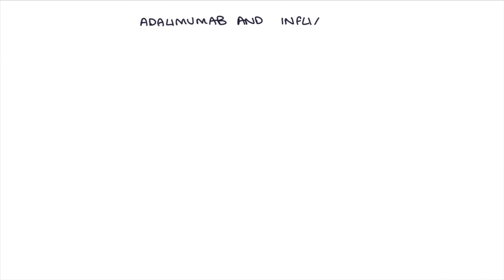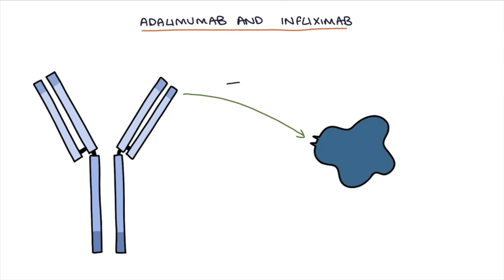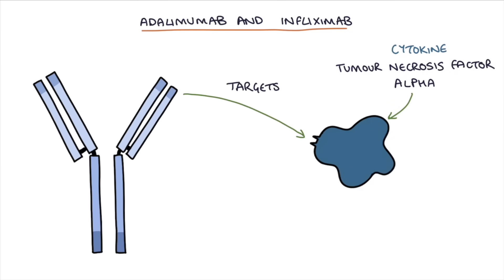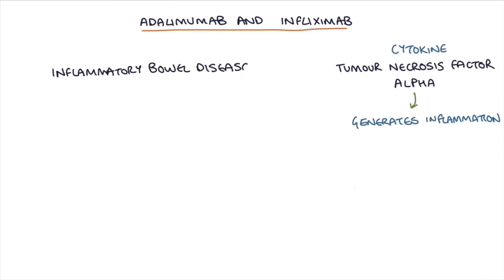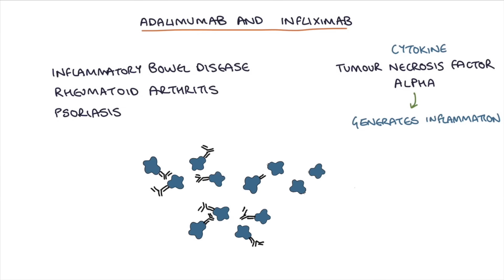Another example is adalimumab and infliximab. These are both monoclonal antibodies that target a cytokine called tumor necrosis factor alpha (TNF-alpha). TNF-alpha is involved in generating inflammation as part of an acute phase reaction and plays an important role in inflammatory conditions like inflammatory bowel disease, rheumatoid arthritis, and psoriasis. These monoclonal antibodies reduce the inflammatory response in these conditions and can be very effective in treating them.